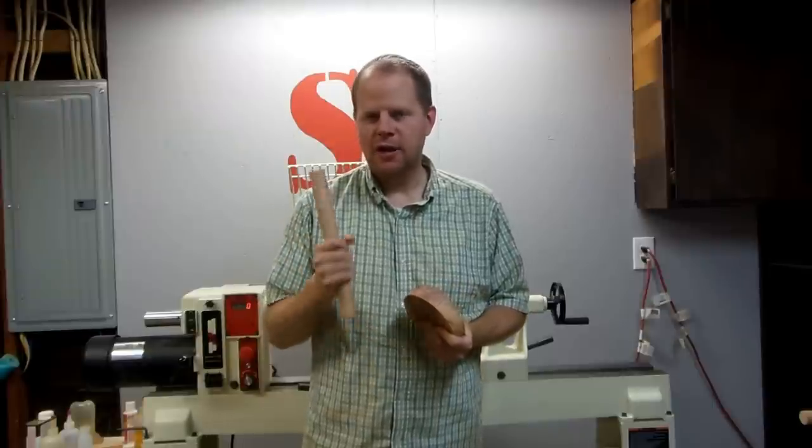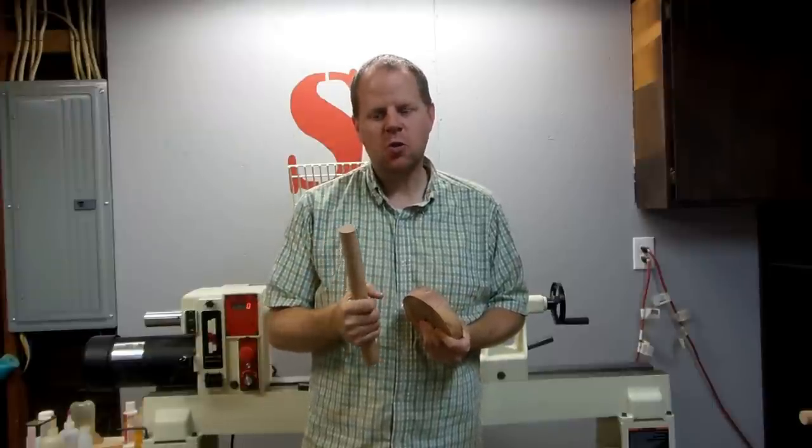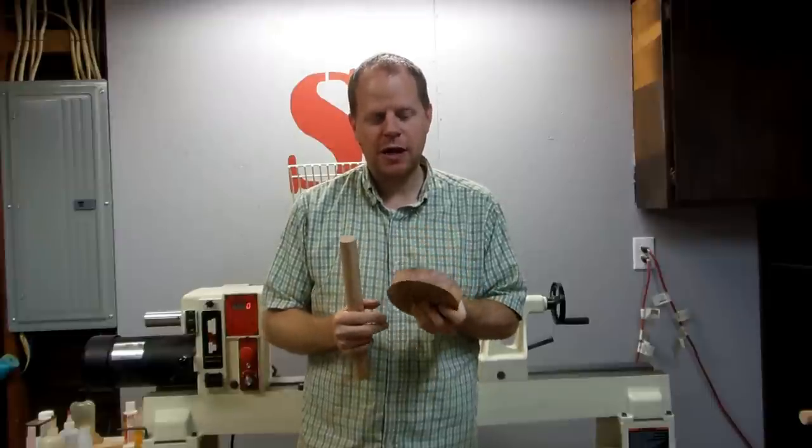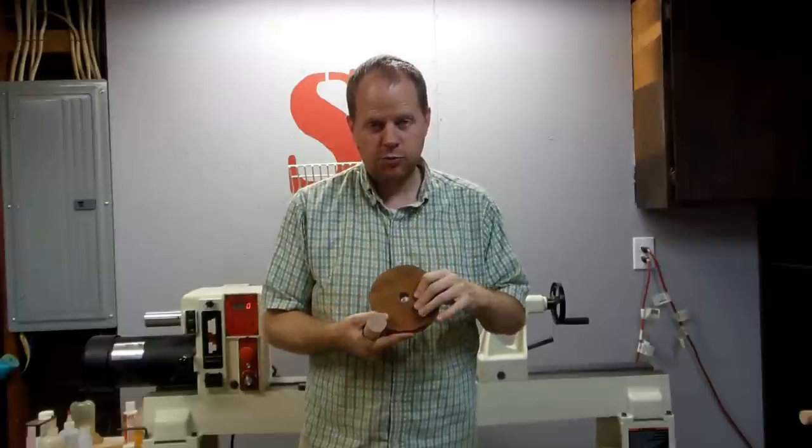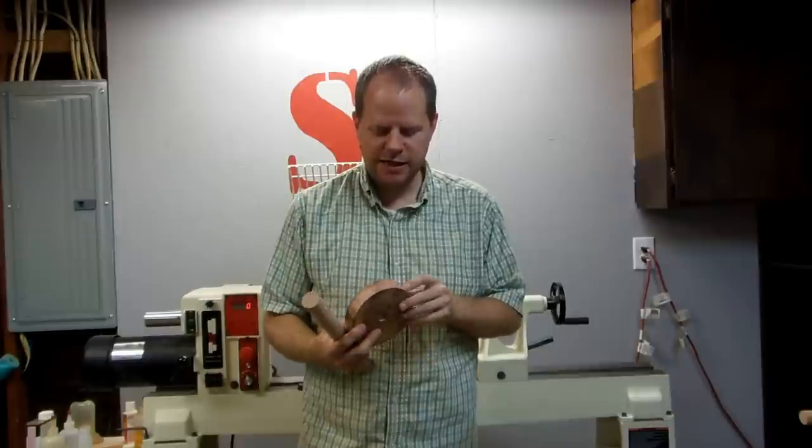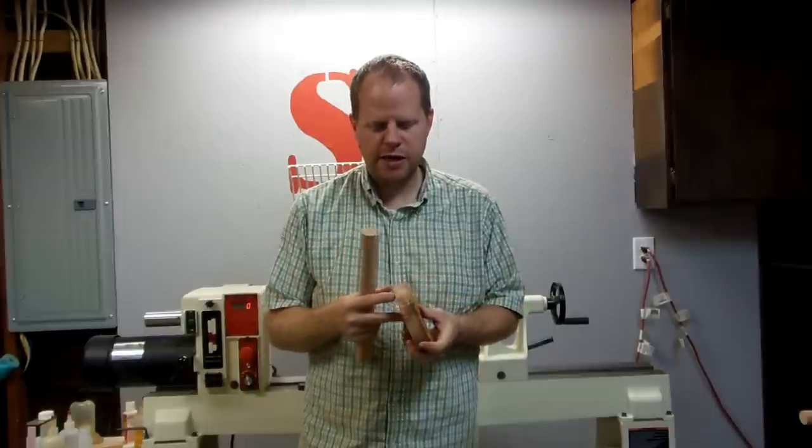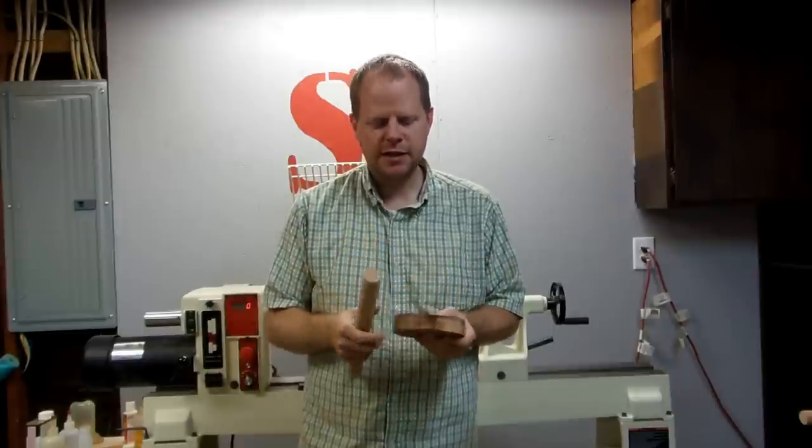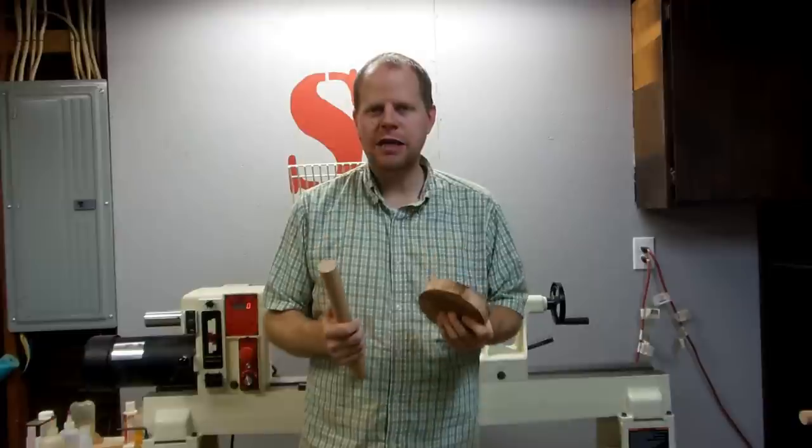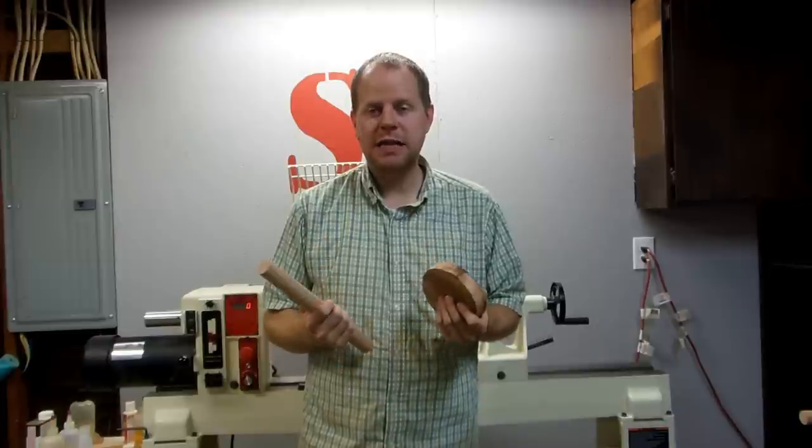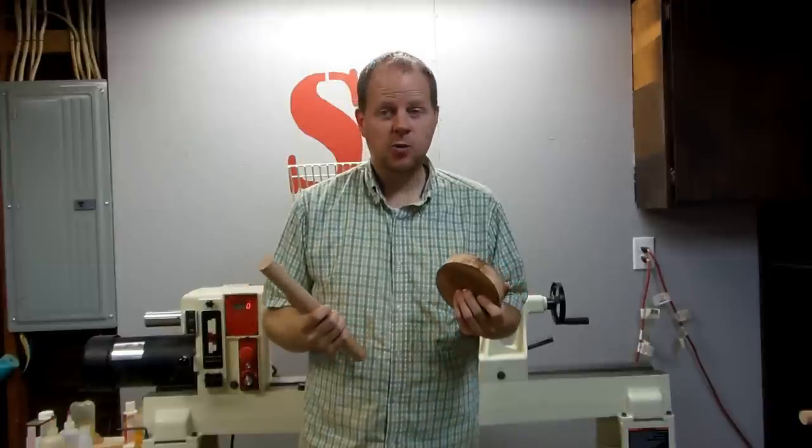So I've got an oak dowel here about an inch and a quarter in diameter and I've got a disc of, I don't know what kind of wood this is. It looked brown when I started. I cut it into a disc and it's got some interesting purple grain in here. We're going to try and turn this into a big jumbo size spinning top on the lathe today. Let's give it a shot.